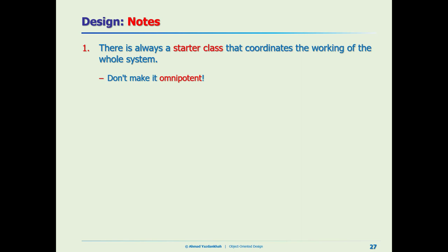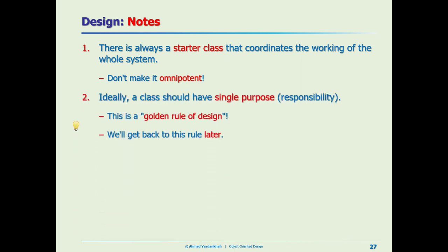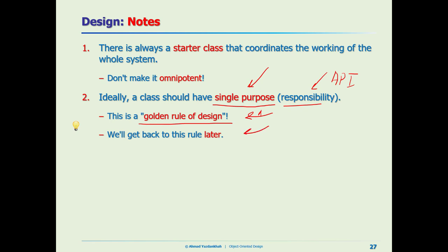Ideally, every class should have a single purpose — a high-level purpose. Sometimes we use the term 'single responsibility' but don't confuse that with the API responsibilities of a class. Every class should have one single purpose, and this is a golden rule of design. We will get back to this because it's very important — I'll have a dedicated lecture on this later.